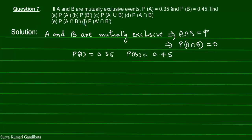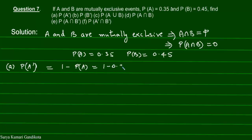Let us find the parts one by one. First, we have to find P(A complement). P(A') is given by 1 minus P(A), and we know that P(A) = 0.35. So it is 1 minus 0.35, and this gives us 0.65.